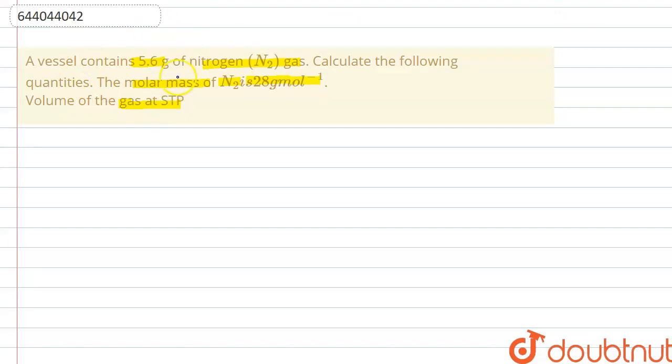So in this question, they have given us the mass of nitrogen gas and they are asking us to calculate the volume of the gas at STP, that is standard temperature and pressure. So let's start with the question.